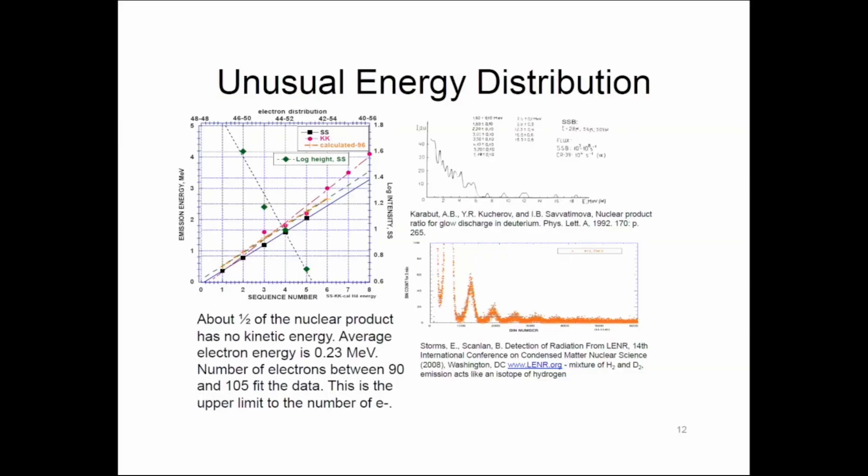This is a measurement of the energy of the emitted nuclear product, not the energy of the electrons. It has a very strange behavior, consisting of a series of energies all separated equally. When the two measurements, the one done in Russia and the one done in the United States, are co-plotted, they agree with one another quite nicely, and they all extrapolate to zero.